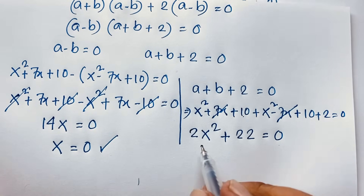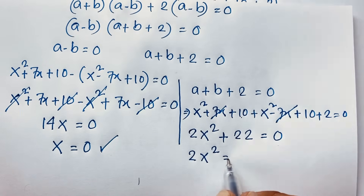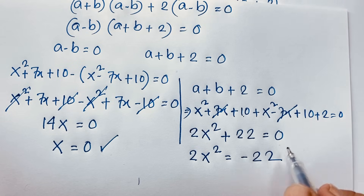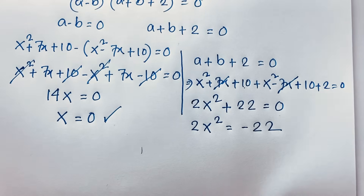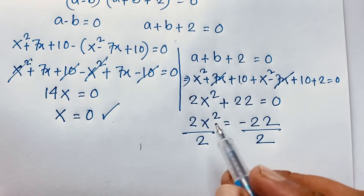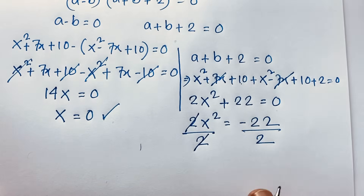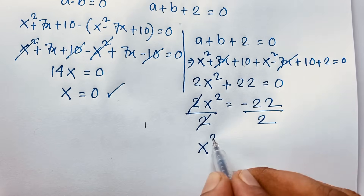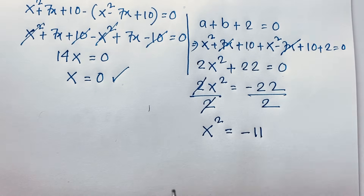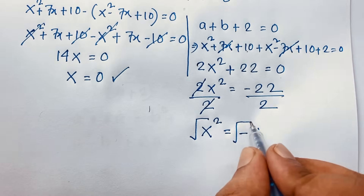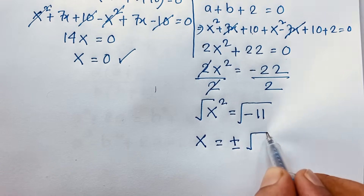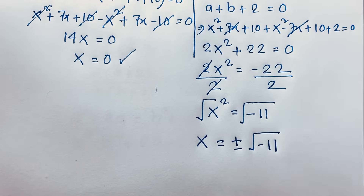Now 2x² = -22. Dividing both sides by 2, x² = -11. Taking the square root of both sides: x = ±√(-11), which is a complex number.